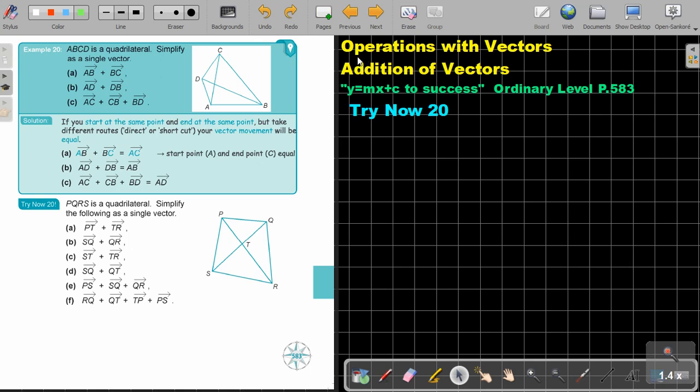We are going to continue with operations with vectors, and we are going to do the second part of addition of vectors. You will find this on page 583 in the Namibia Ordinary Level Mathematics textbook, Y equals MX plus C to success.